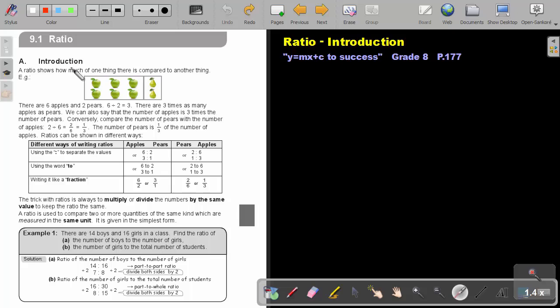Let's look at the introduction. A ratio shows how much of one thing there is compared to another thing. For example, there are six apples and two pears. So six divided by two is three. There are three times as many apples as pears. We can also say that the number of apples is three times the number of pears.